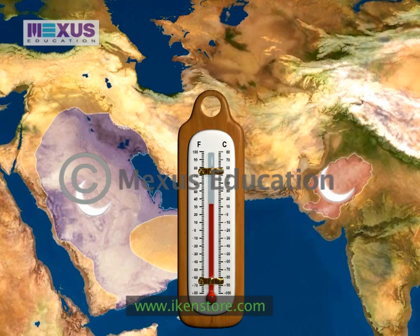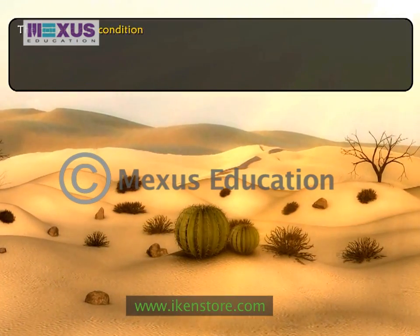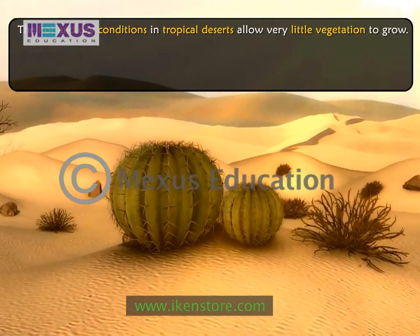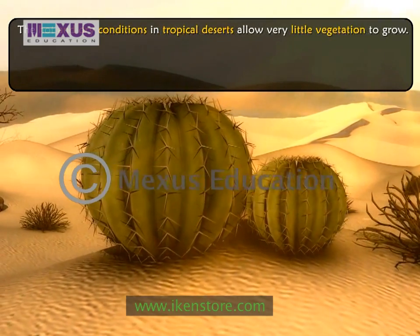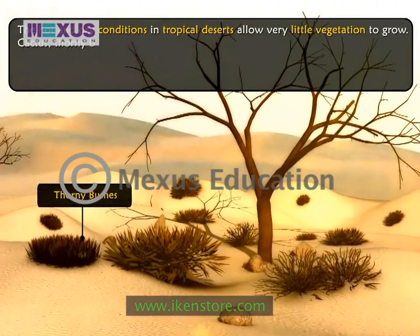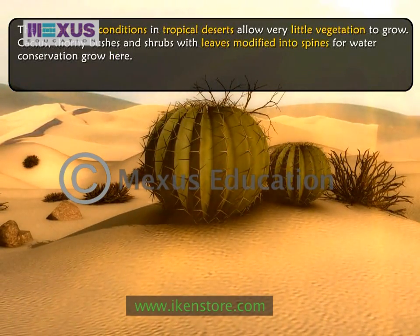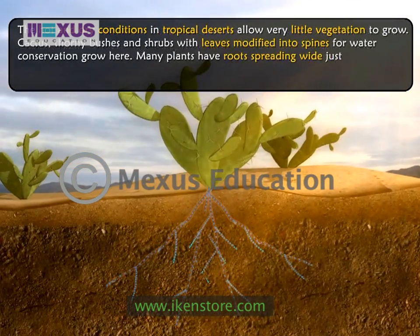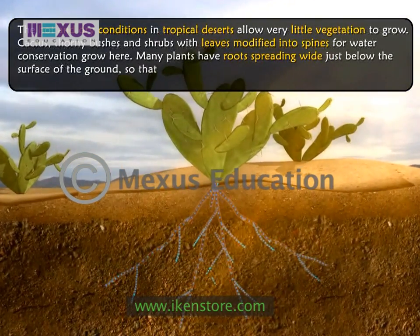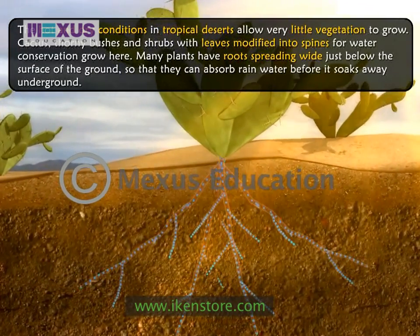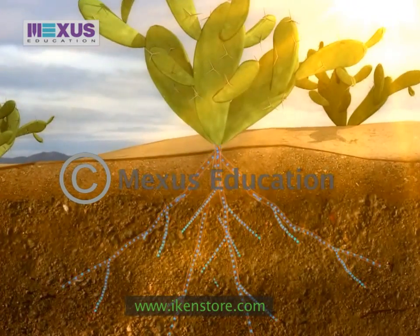Winters are cool and summers are hot with very little rain. The difference between day and night temperatures is very large. The hot and dry conditions allow very little vegetation to grow. Plants obtain and conserve water in different ways. Cactus, thorny bushes, and shrubs with leaves modified into spines for water conservation grow here. Many plants have roots spreading wide just below the surface of the ground so that they can absorb rainwater before it soaks underground. The roots also absorb dew which forms in the ground at night.